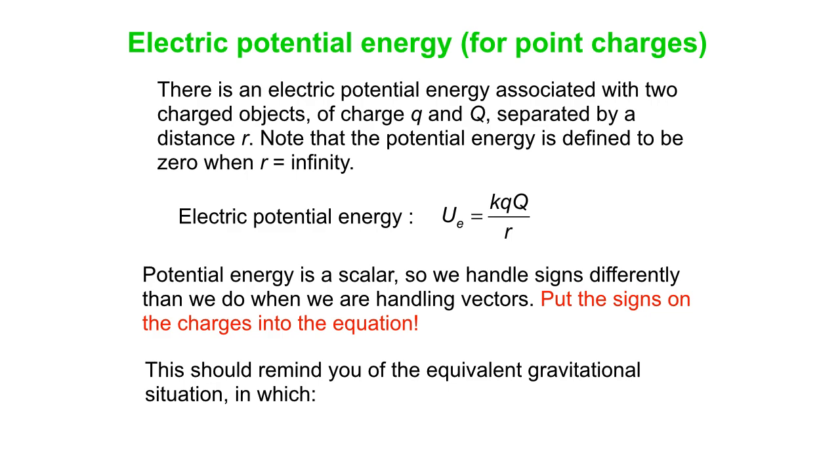Now, this equation should remind you of the equivalent gravitational situation, which was the following. Gravitational potential energy, in general, is minus GmM over r. Note that in that equation, you have to physically put in a minus sign. In the potential energy, electric potential energy equation, you do not. The charges handle the signs for you correctly.